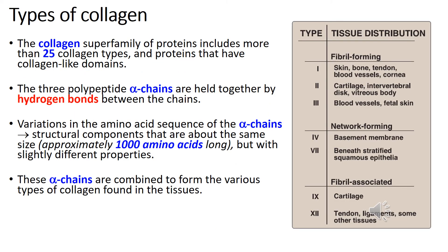The collagen superfamily of proteins includes more than 25 collagen types, as well as additional proteins that have collagen-like domains. The three polypeptide alpha chains are held together by hydrogen bonds between the chains. Variations in the amino acid sequence of the alpha chains result in structural components that are about the same size — approximately 1000 amino acids long — but with slightly different properties. These alpha chains are combined to form various types of collagen found in the tissue.